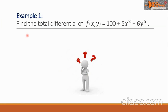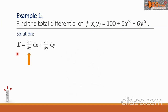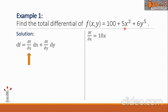Example 1: find the total differential of f(x, y) equals 100 plus 5x squared plus 6y raised to 5. Let's begin with the partial derivative of f with respect to x. The value will be 10x, because the derivative of 100 is 0 (constant), derivative of 5x squared is 10x, and derivative of 6y raised to 5 is 0 because y is taken as constant.